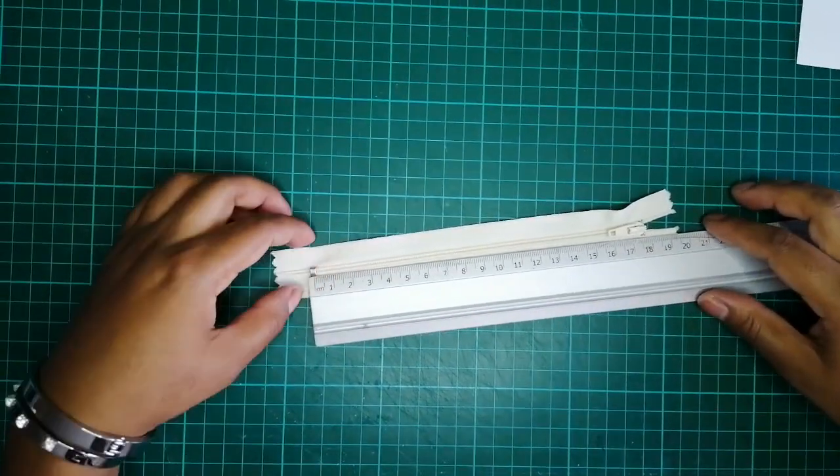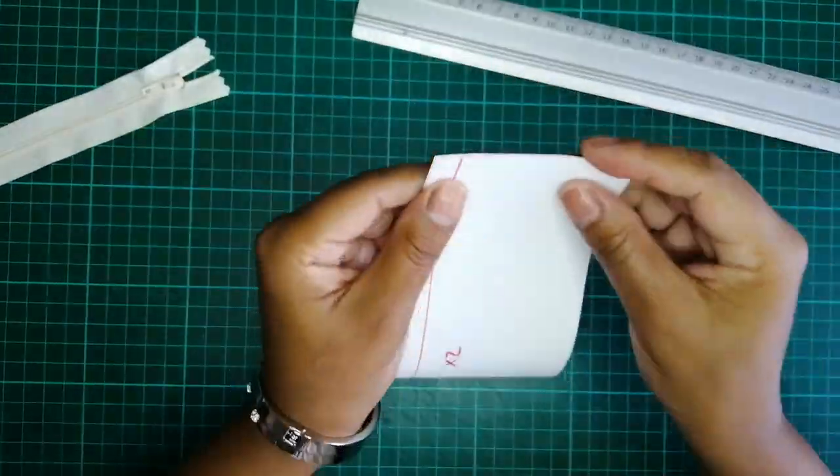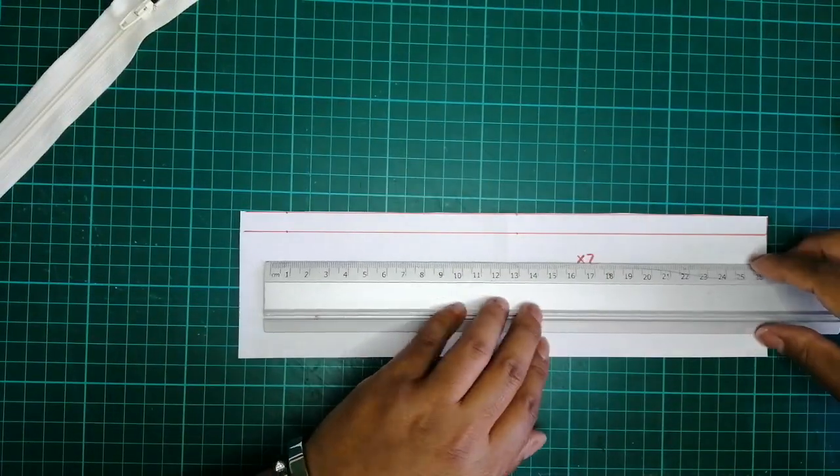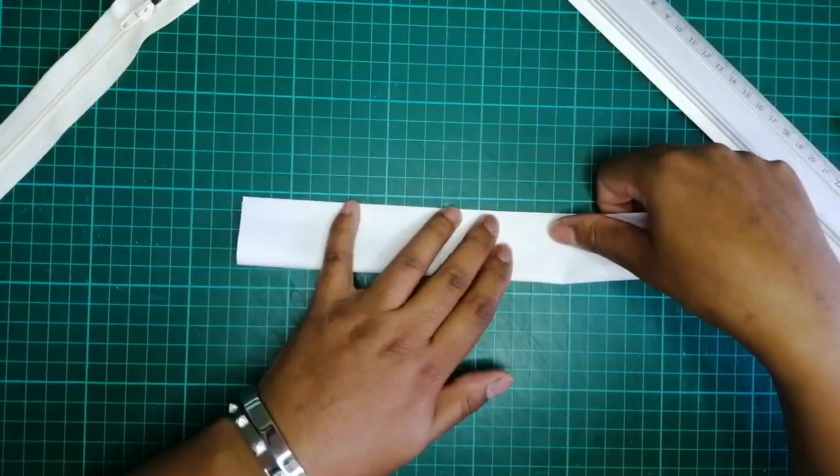To mark the position of the zip, measure the length of the zip first, then fold the pattern in half lengthways and widthways. Put a cross at the center point.